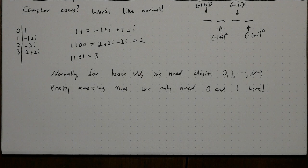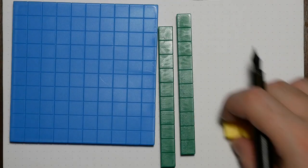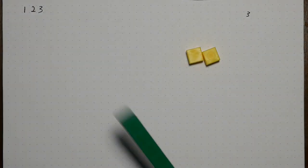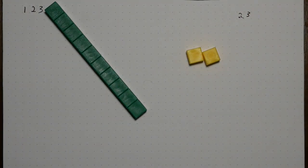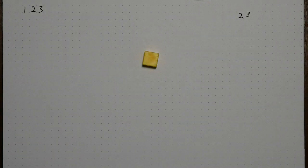First, let's review how base 10 works. Here we have a number, and we have three single cubes. We'll write down 3, take away those cubes, and divide everything by 10. Now there are two singles. Take them away, divide by 10 again, and now you've got just one single cube.